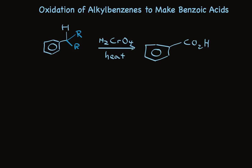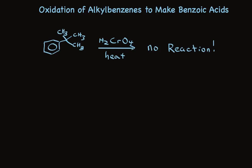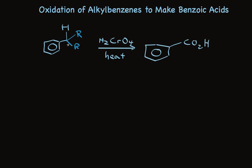When you look at the next result — treatment of tertiary butyl benzene with chromic acid in heat — and see that there is no reaction, it becomes clear that the benzylic hydrogen is required. We can have none, one, or two alkyl groups attached to that carbon, but not three. This benzylic hydrogen is essential for the reaction to occur.